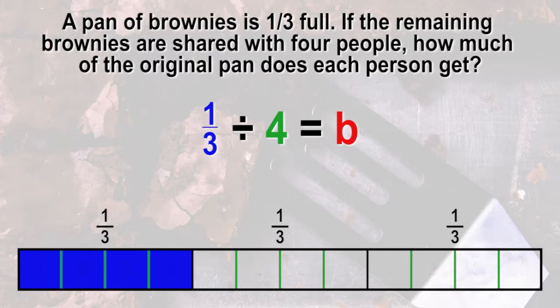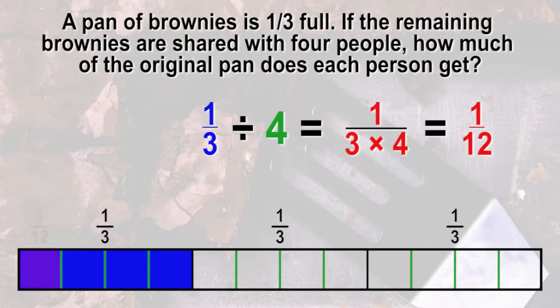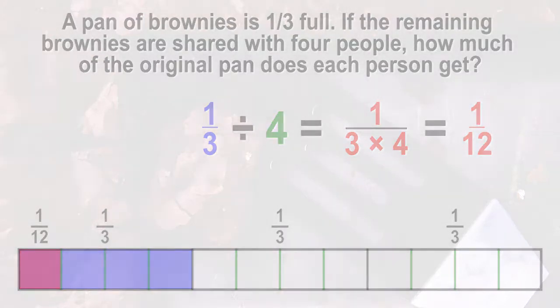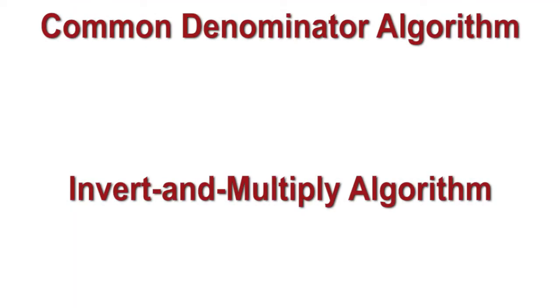So 1/3 divided by 4 equals 1 over 3 times 4, which is 1/12. One of these parts is 1/12 of the whole. Each person gets 1/12 of the original pan of brownies.